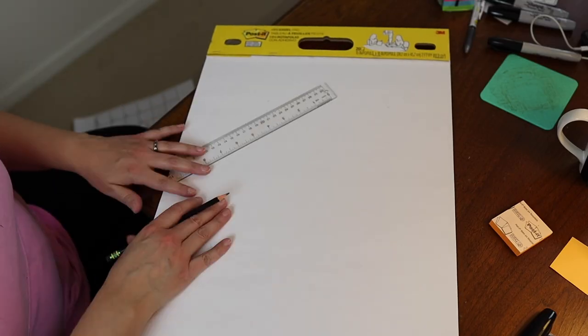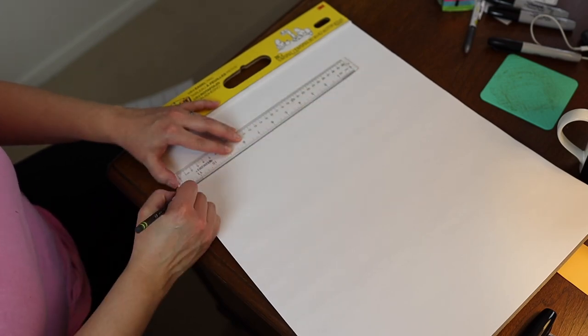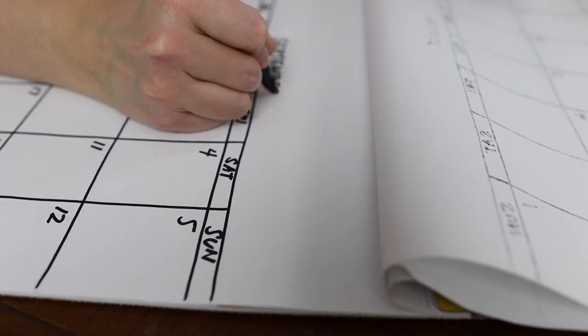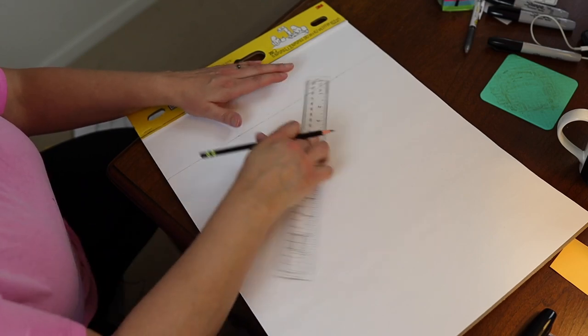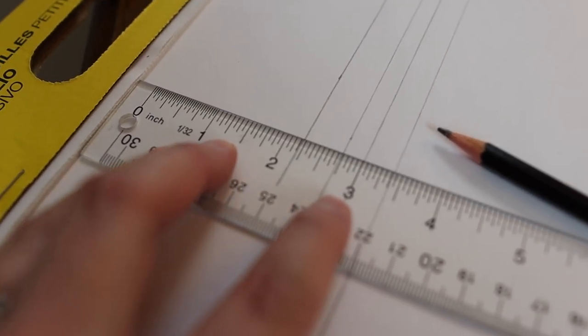And we're going to do it down here too, so that we can make a straight line. And then we want to give ourselves some space to actually write the name of the month.